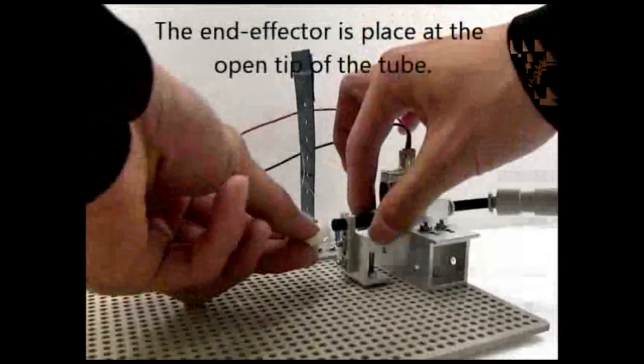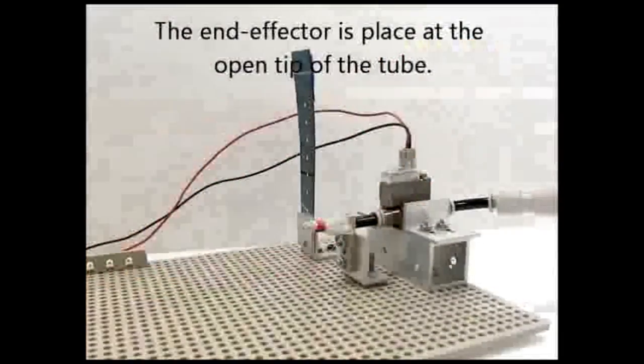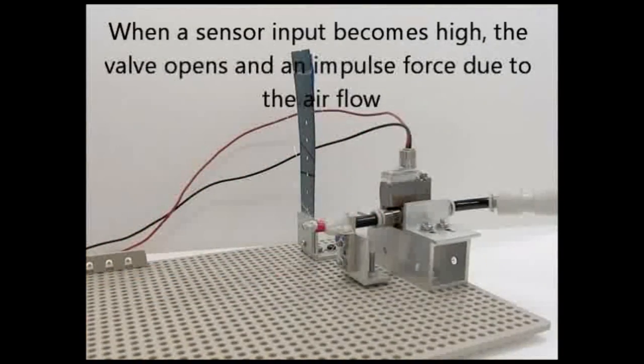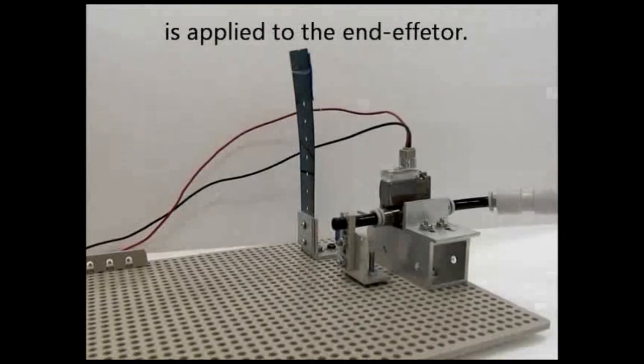The end effector is placed at the open tip of the tube. When a sensor input becomes high, the valve opens and an impulse force due to the air flow is applied to the end effector.